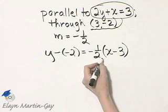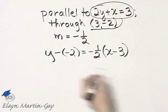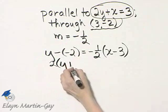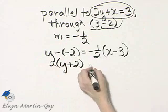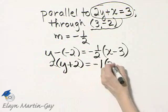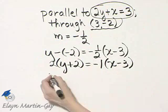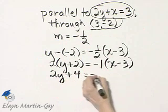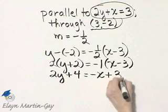So let's begin by simplifying. I will multiply both sides by 2. So I'll have 2 times y plus 2 is equal to, if I multiply this side by 2, the 2's cancel. And I have negative 1 times x minus 3. This is 2y plus 4 is equal to negative x plus 3.